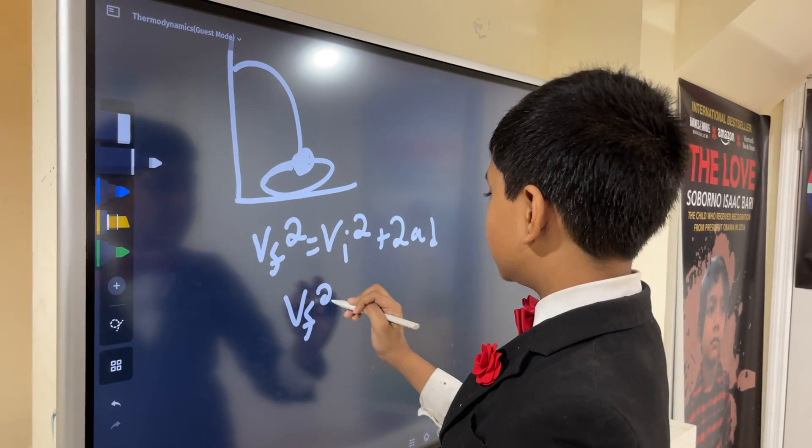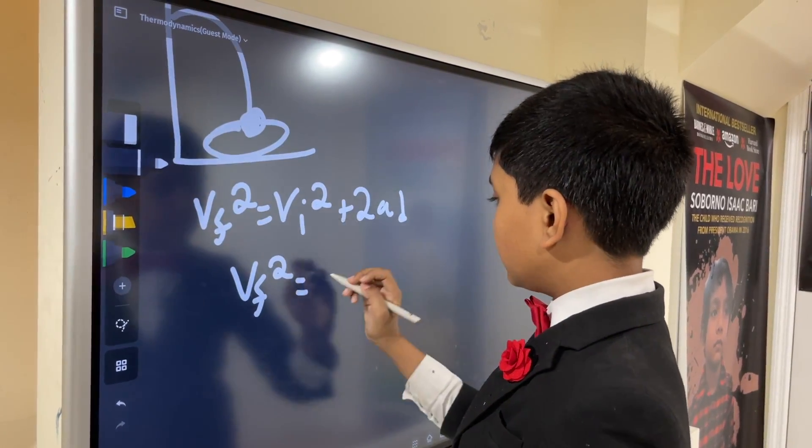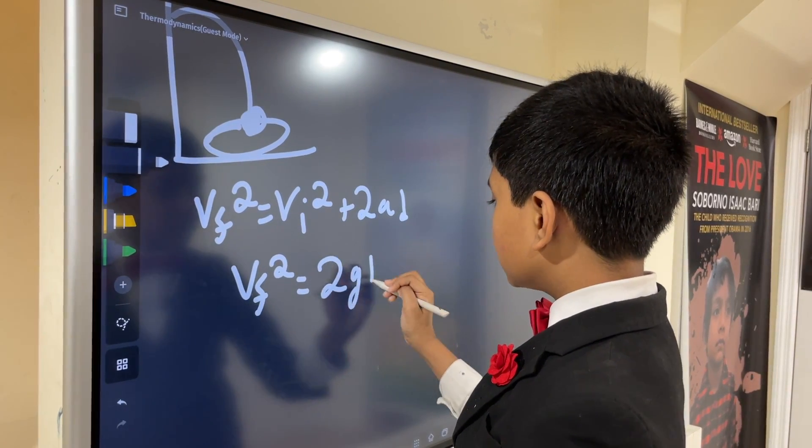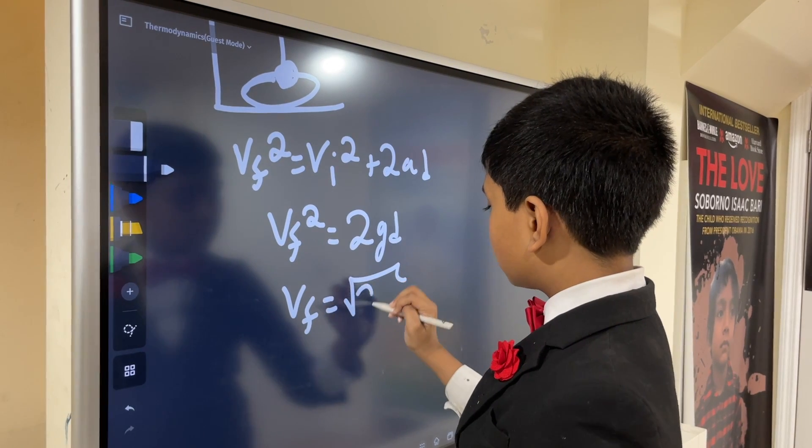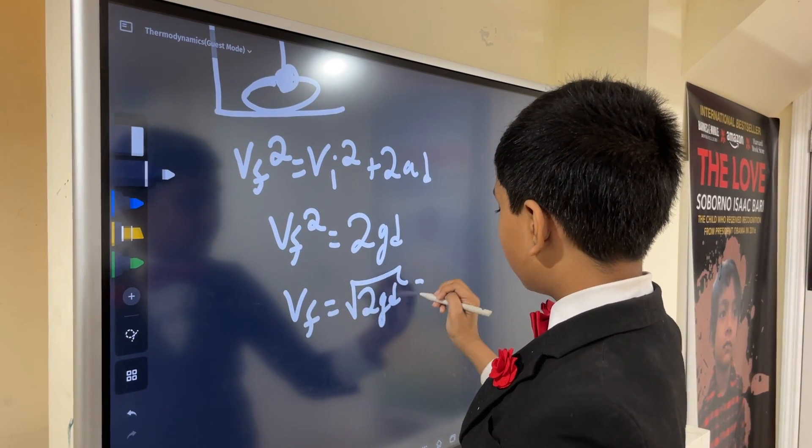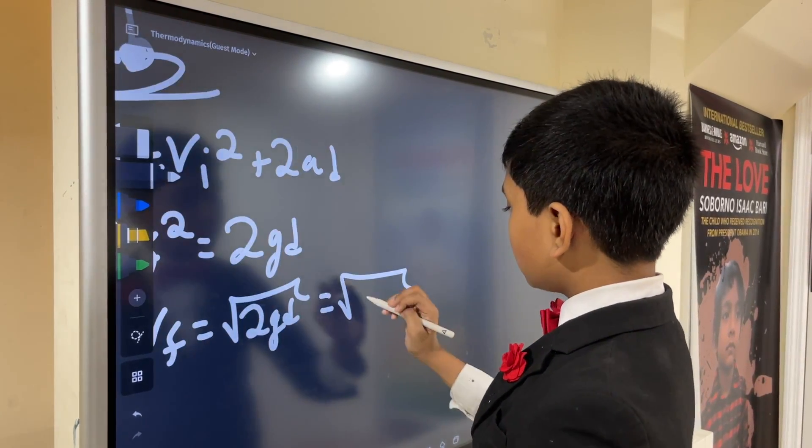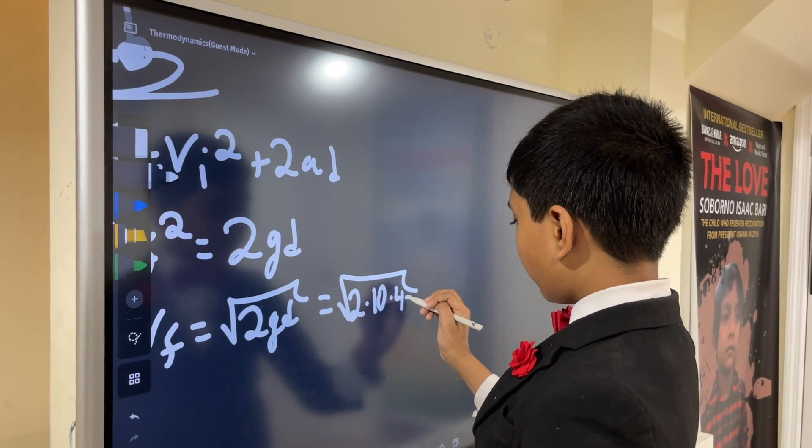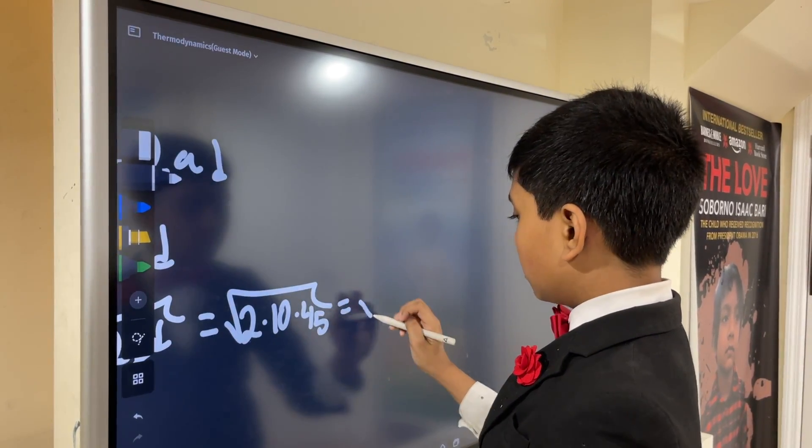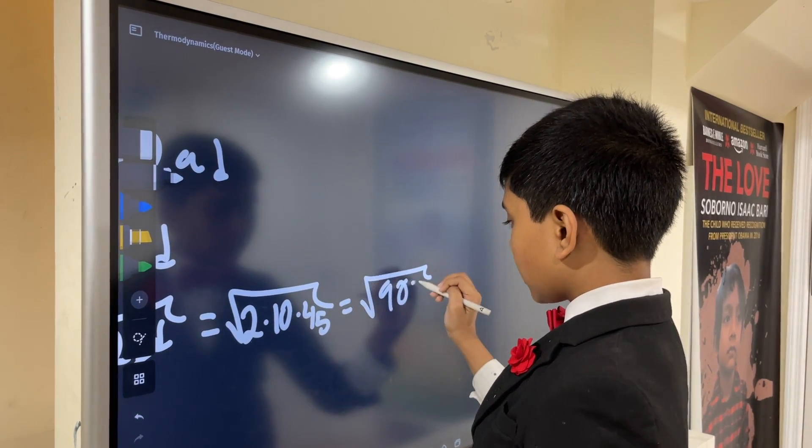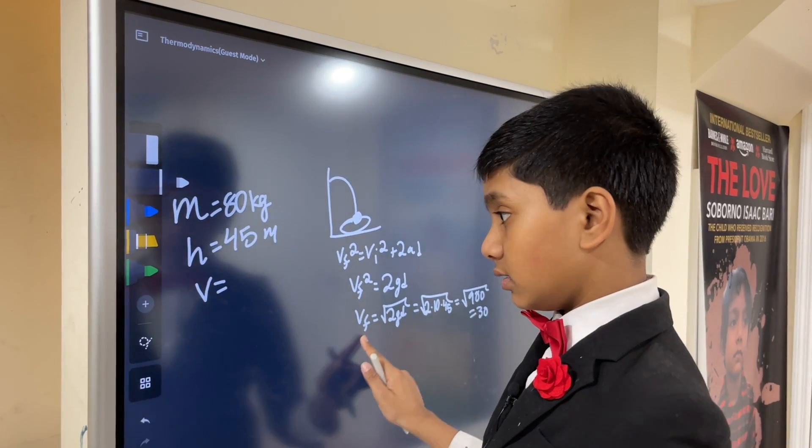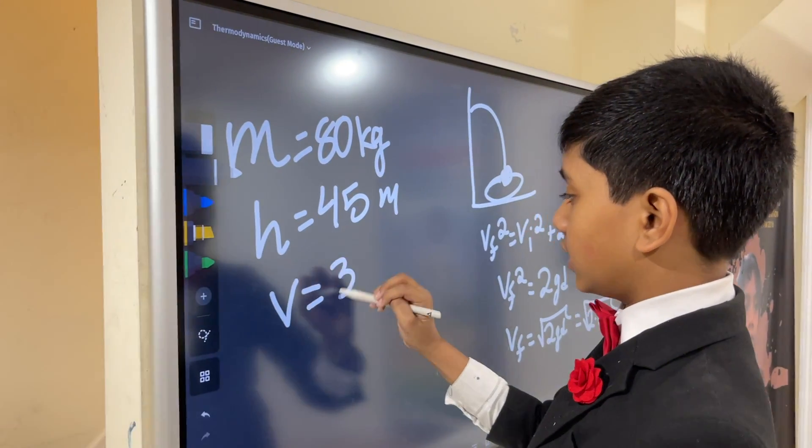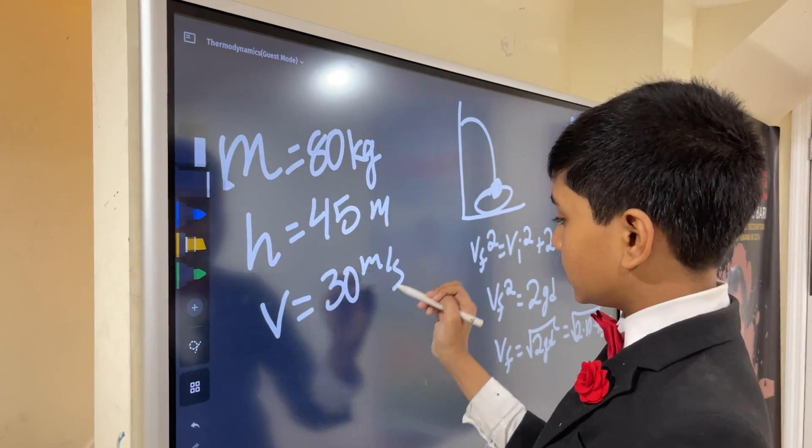vi squared here is zero because he's just walking out, and then here a is g. So we're left with 2gd, so it's the square root of 2gd, which is 2 times 10 times 45, so the square root of 900, which happens to be 30. All right, so v is 30 meters per second, or at least v final.